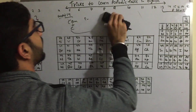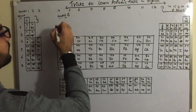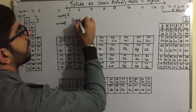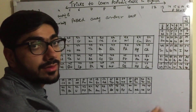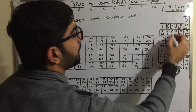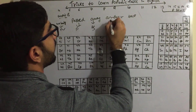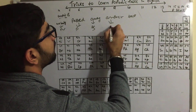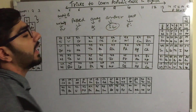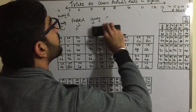Moving on to Group 15. The mnemonic is: 'Nobody passed away answer back.' 'Nobody' means Nitrogen, 'passed' means Phosphorus, 'away' means Arsenic (As), 'answer' means Antimony (Sb), and 'back' means Bismuth (Bi). This is Group 15 of the p-block.